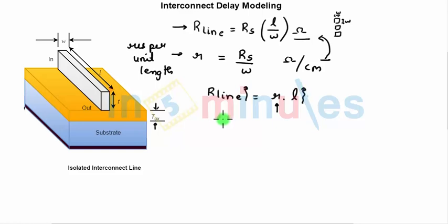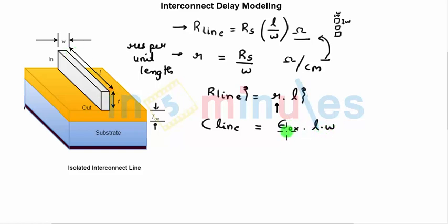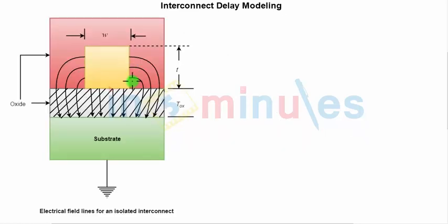Let's quickly do the similar analysis for C_line as well. C_line, the parallel plate capacitance, can be estimated by the simple parallel plate formula: permittivity of the oxide multiplied by the area (L into W), divided by the thickness of the oxide TOX. The unit here is Farads. This is a first-order approximation; in real time there will be fringing capacitance from the side walls of the interconnect as well.